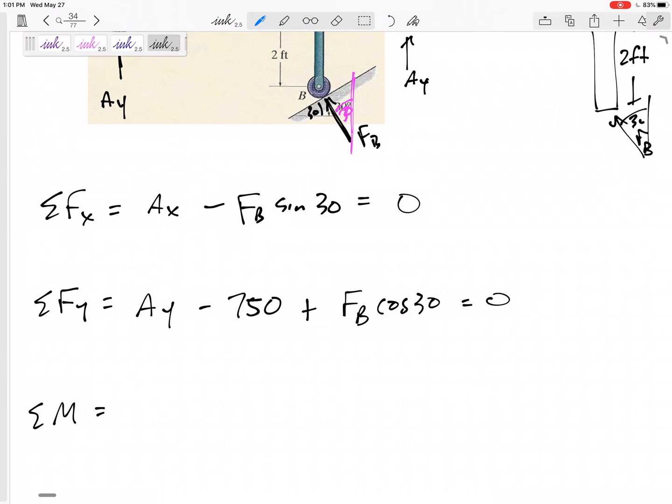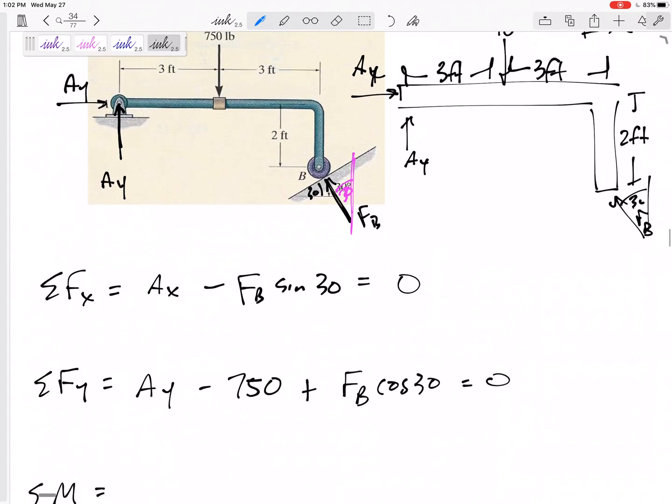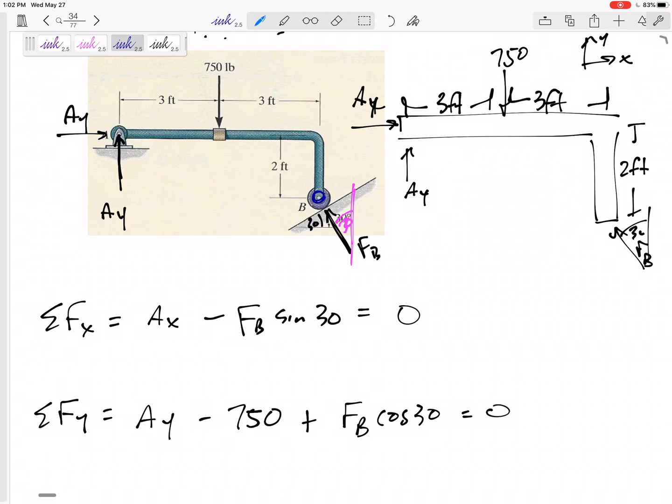Now, the more you do these, the more you might actually want to start with your moment equation. Why might you want to start with your moment equation? Because you can think ahead, you can decide what point you want to do your moment about, and nine times out of ten that moment equation you can make it so that it only has one unknown.